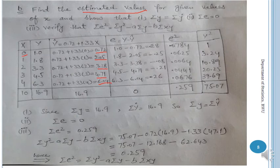After all ŷ values are calculated, verify that Σy = Σŷ = 16.9, confirming the first part. Then compute the residual column e = y − ŷ. The first residual: 1 − 0.72 = 0.28. Next: 1.8 − 2.05 = −0.25. Then: 3.3 − 3.38 = −0.08.